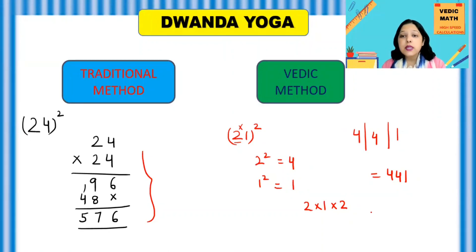So the concept is you write the square of the left part, write the square of the right part and in the middle, you do 2 times of these 2 numbers, the product of these 2 numbers and then write the answer. So the answer will be your square of the given number.